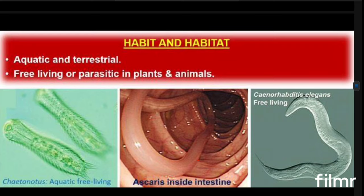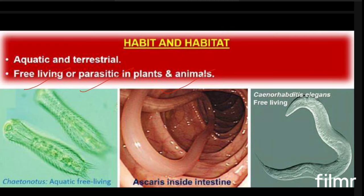Checking the habitat, they are mostly aquatic and some are even terrestrial. You can find these organisms as free-living forms, parasitic forms, and also as parasites in animals and plants. Aquatic free-living forms are there, like Tylenchus. Caenorhabditis elegans is another free-living form. Ascaris is an example of an endoparasite in the intestine.